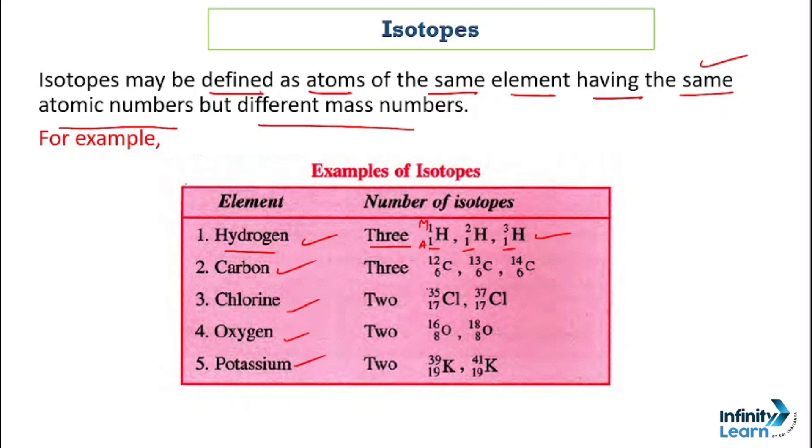We will talk about carbon. So carbon isotopes have mass numbers 12, 13, and 14, but atomic number 6.